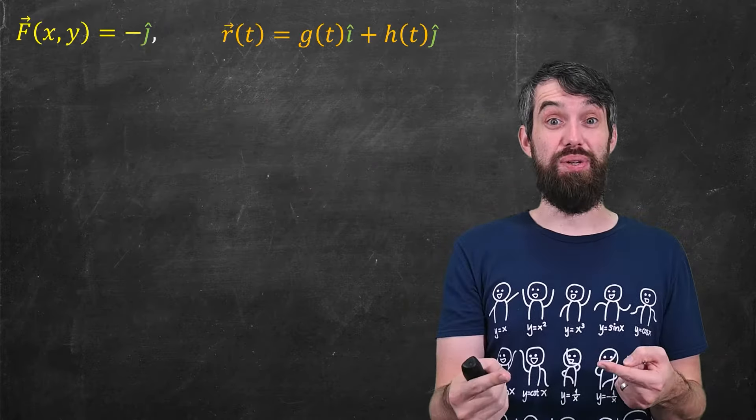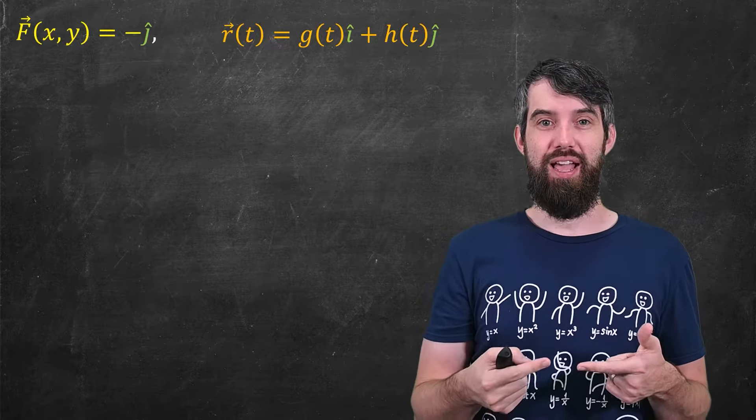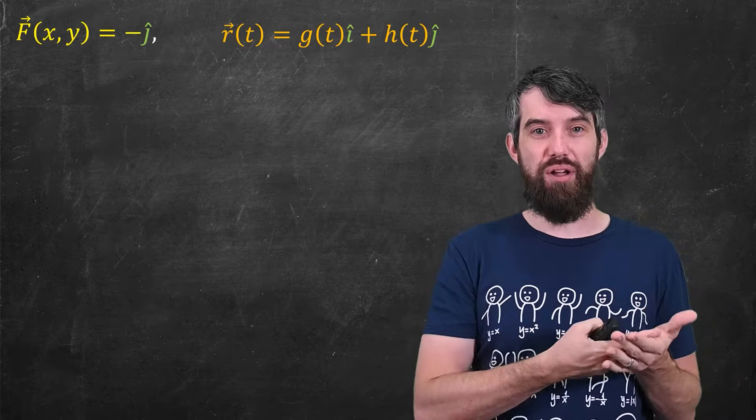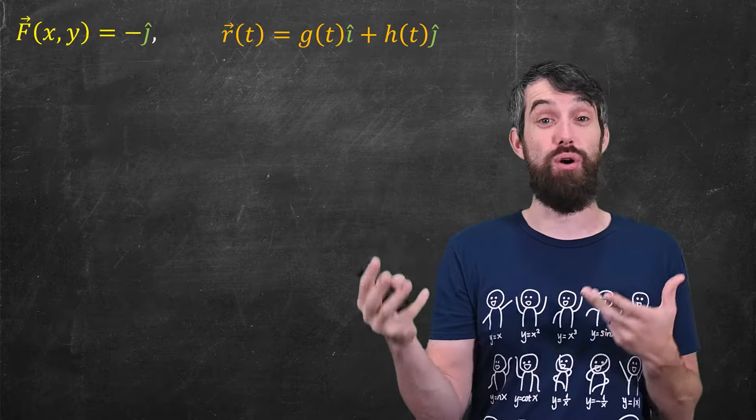So let's return to the toy example of gravity that I was doing, this field being minus j hat. And then I'm going to take a completely arbitrary curve, r of t going from g of t up to h of t, where I haven't specified what those curves actually going to be, because I'm going to allow them to vary.